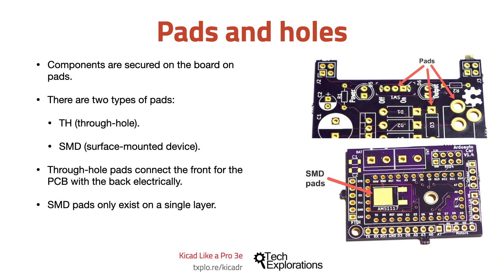Through-hole pads, unlike SMD pads, connect the front of the PCB with the back electrically. In these examples you can see that the gold plating of the pad fills the inside of the hole. If you turn the PCB around you'll see that a matching pad exists in the back. Boards with mostly through-hole pads are popular among hobbyists because through-hole components are easier to work with, at least in the beginning.